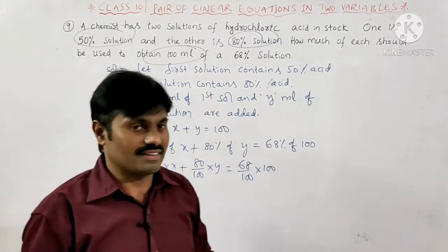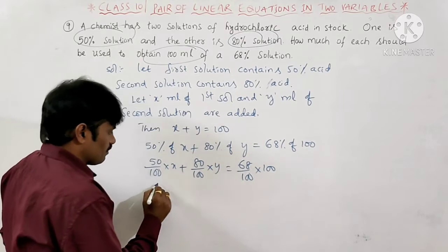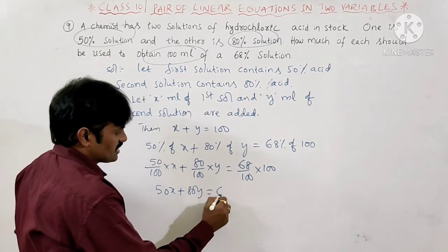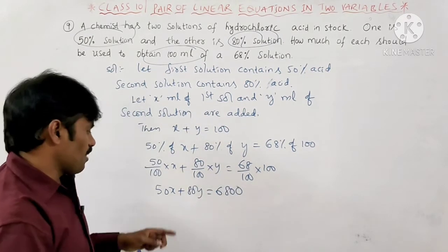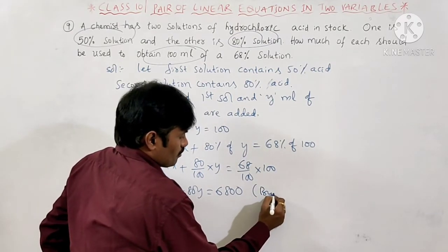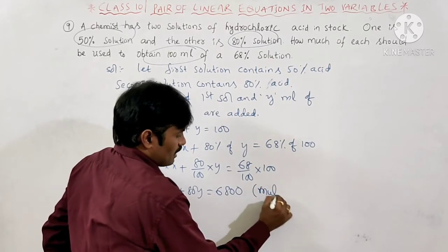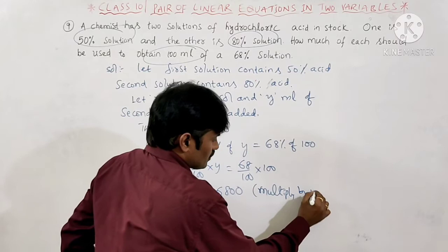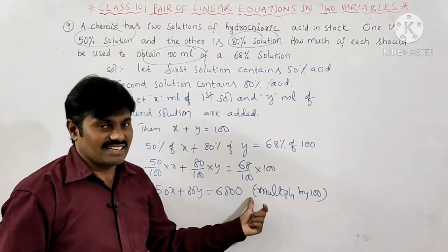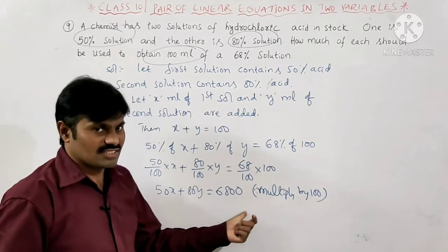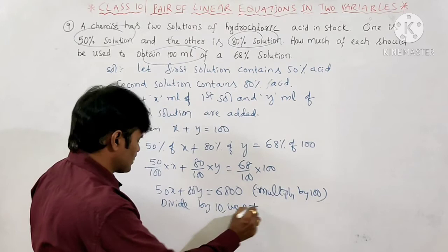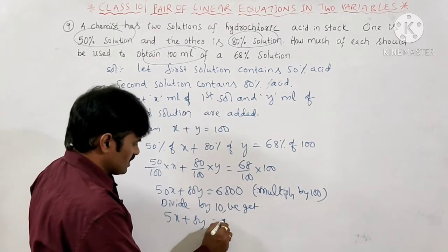Since percent means per 100, we multiply throughout by 100. This gives 50X plus 80Y is equal to 6800. The common factor is 10, so dividing by 10 gives us 5X plus 8Y is equal to 680.